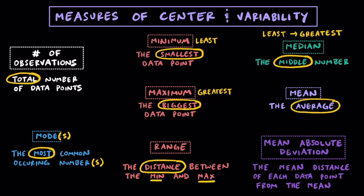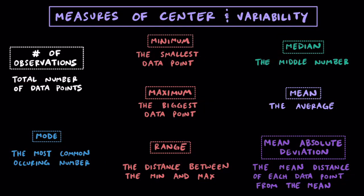And finally, the most time-consuming one: we have the mean absolute deviation. This is going to be the mean distance, or average distance, of each data point from the mean or the average. Throughout the rest of this video, we're going to focus on these eight different concepts and how we can use them to represent data after we ask a statistical question.